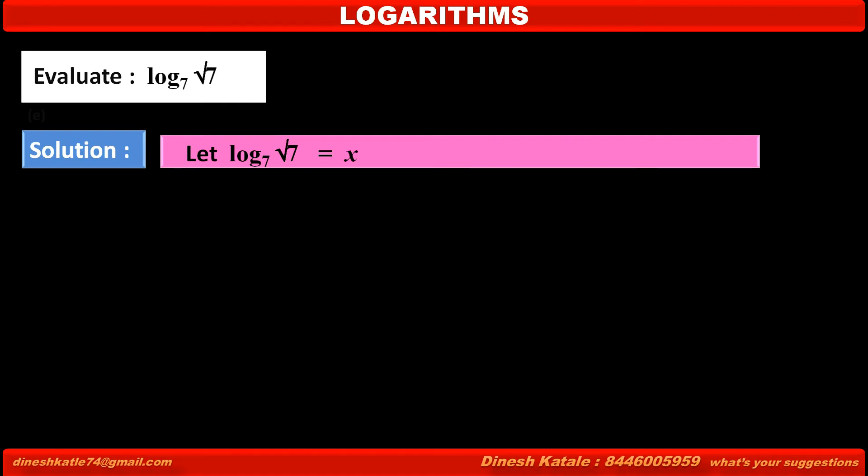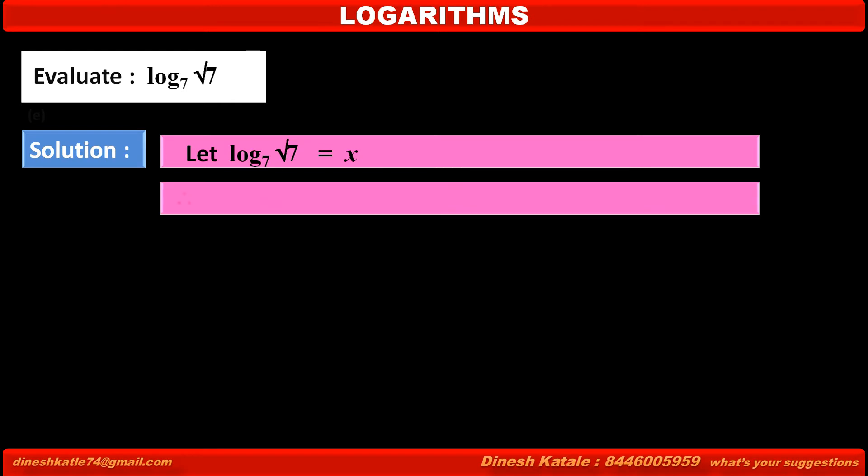Let log of root 7 to the base 7 equal x. Therefore, converting the above logarithmic form into exponential form,